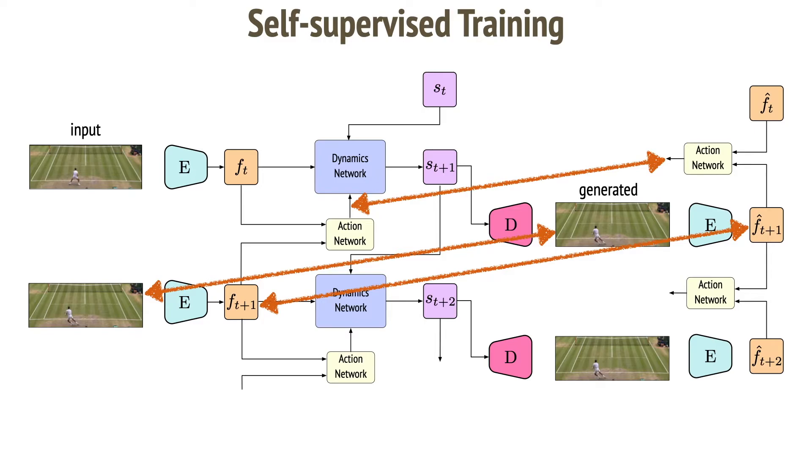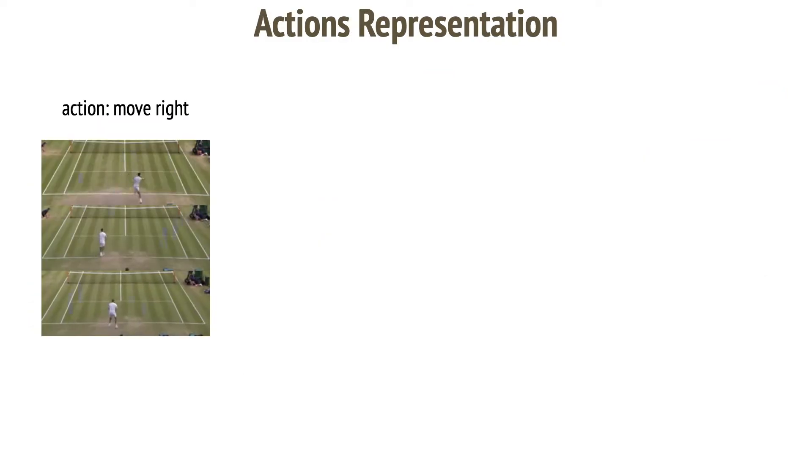The main caveat is in the action representation. For example, here we see three instances of the same action, move right. Different agents perform the action differently. Therefore, a single action class label is not sufficient.